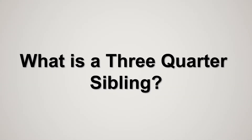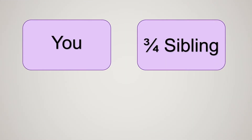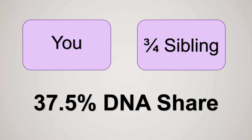Hello and welcome to today's video where we will be discussing what is a three-quarter sibling. A three-quarter sibling is another type of sibling. You have half siblings, you have full siblings, and a couple of other types of siblings, but the one in this video we'll be discussing is a three-quarter sibling. Three-quarter siblings share 37 and a half percent DNA.